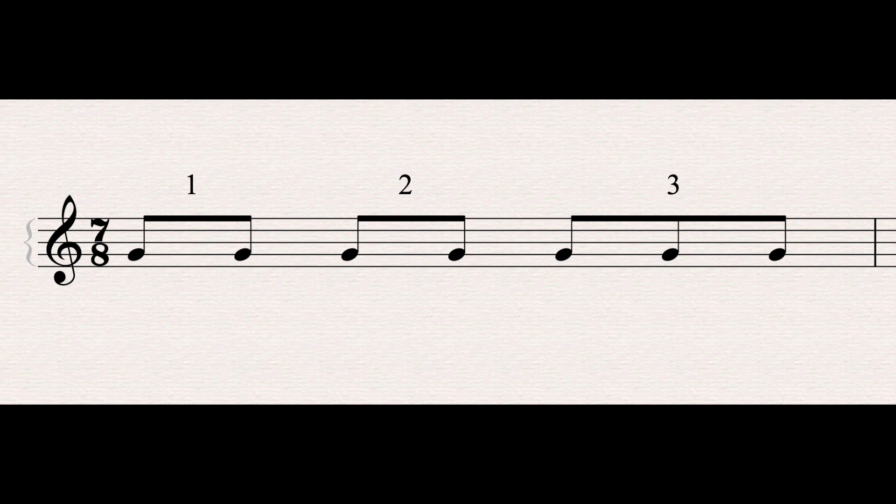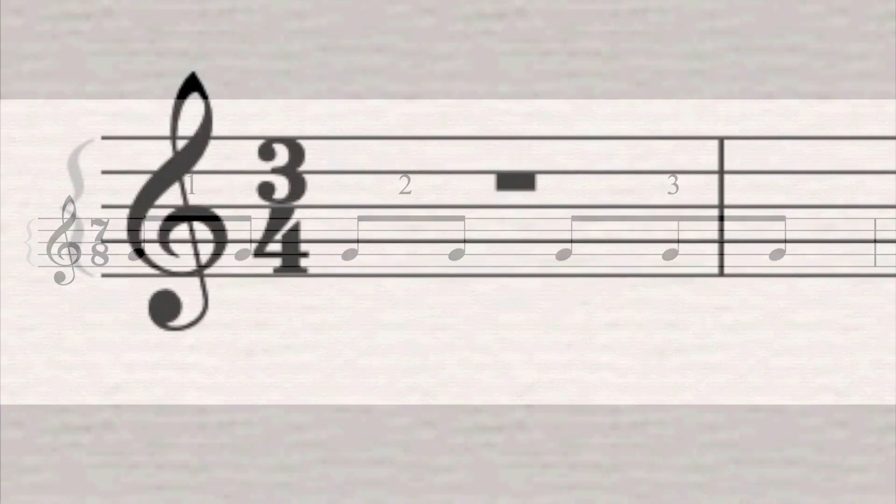Now rather than just ploughing into our melody, I'm going to do something you might think a little unusual. We've established that 7-8 has three main beats, and to begin our process I'm going to even out the beats and compose a simple tune in 3-4 time. Are you with me? We'll get to 7-8, but first I'm going to create a draft in 3-4 time, and it will be very simple.